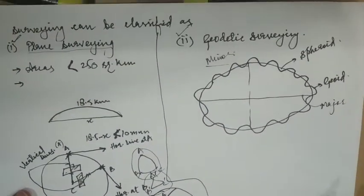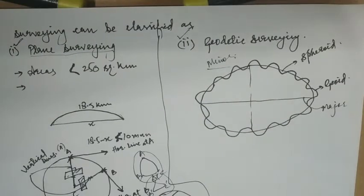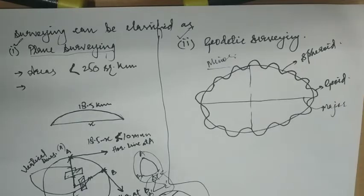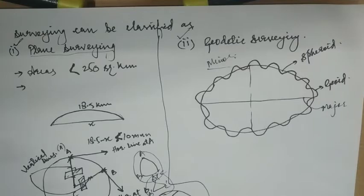Coming to geodetic surveying: geodetic surveying is the type of surveying in which the curvature of the earth is taken into consideration and a very high standard of accuracy is maintained. The main object of geodetic surveying is to determine the precise location of a system of widely spaced points on the surface of the earth. The points so located are used as control stations of the primary surveys, and secondary surveys of less precision are connected through these control stations.